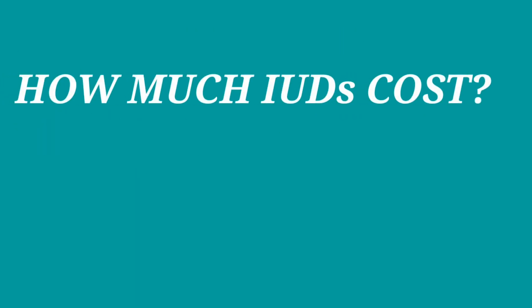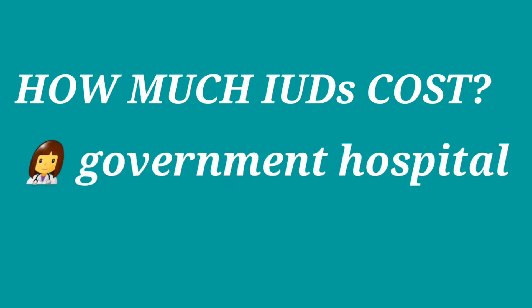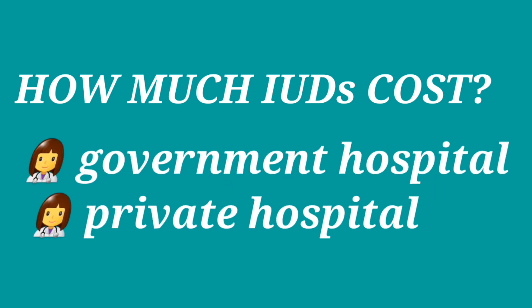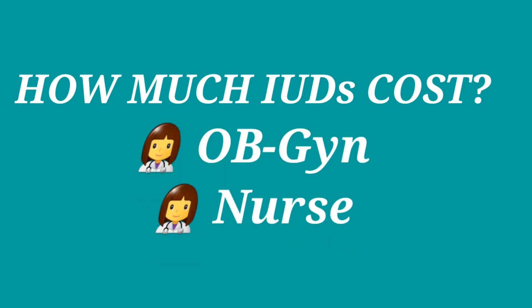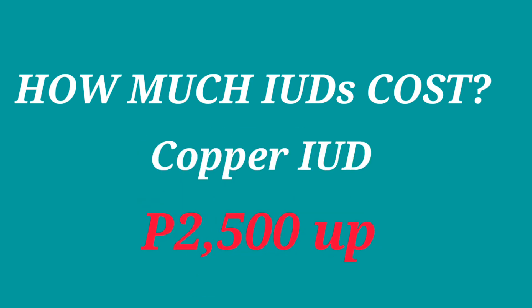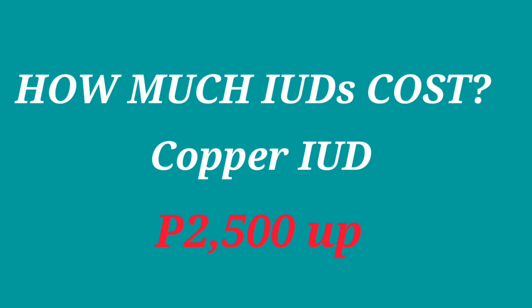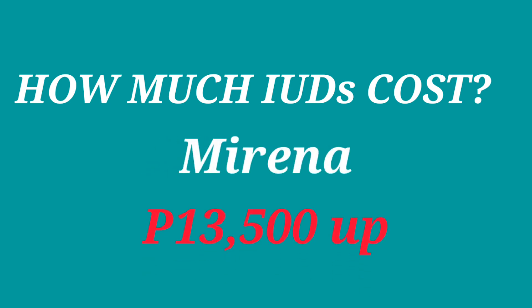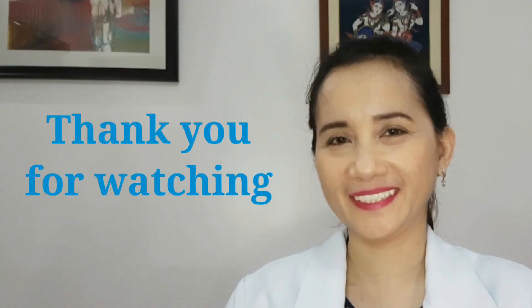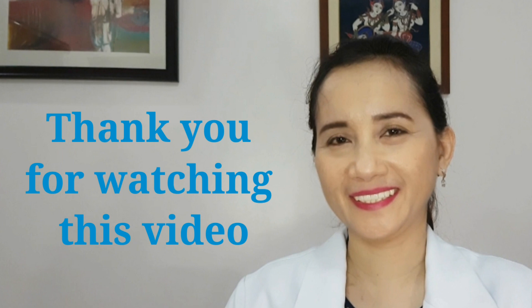How much does an IUD cost? It depends on whether you go to a private or government hospital and your healthcare provider. The copper IUD starts at ₱2,500 and is free in government hospitals. Mirena starts at ₱13,500 depending on your OB-GYN. Thank you for watching — I hope you learned a lot about IUDs.